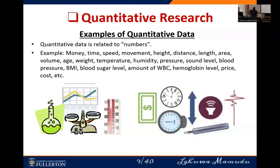Now let's look at some examples of quantitative data. As mentioned, quantitative data talks about numbers. You might think about money, time, speed, movement, height, distance, length, volume, BMI (body mass index), blood sugar level, the amount of acquired blood cells, and hemoglobin level. These are all examples of quantitative data.